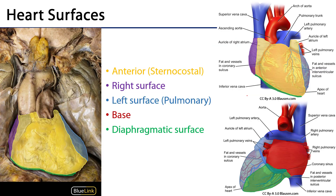There are several heart surfaces germane to understanding the complexity of the heart's structure. I've color-coded them in both a cadaveric photo and medical illustrations. The portion of the heart immediately posterior to the sternum is the anterior surface, often referred to as the sternocostal surface.